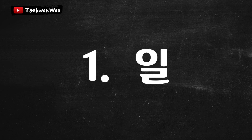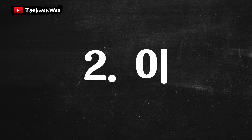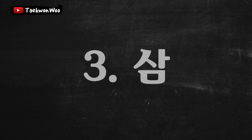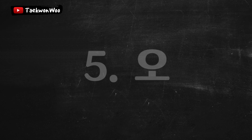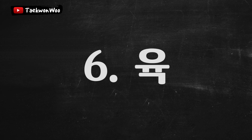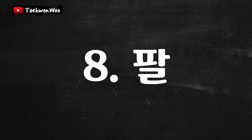The one in Korean is 일. Number two is 이. Number three is 삼. Number four is 사. Number five is 오. Number six is 육.